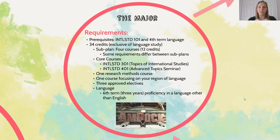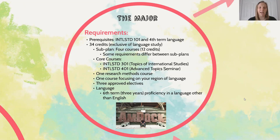In addition to those four sub plan courses, you have two core courses. International Studies 301 is a large topics course covering a general topic and brings together many students who major or minor in International Studies. International Studies 401 is the opposite — a smaller class on a more specific, current topic that allows students to network and make connections with other internationally-minded students before graduating.